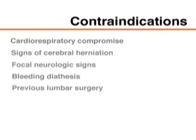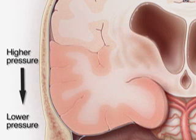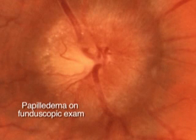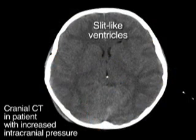There are specific contraindications to lumbar puncture. The condition of patients with cardiorespiratory compromise may worsen as a consequence of the position they need to assume for lumbar puncture. The procedure should also be avoided in patients with signs of cerebral herniation, incipient herniation, or increased intracranial pressure, and in those with focal neurologic signs. In such patients, cranial CT should be performed before lumbar puncture, although CT may not reveal signs of increased intracranial pressure.